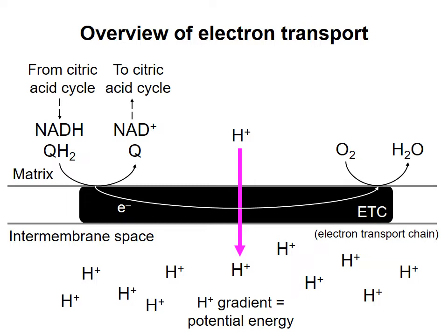The process of electron transport is energetically favorable. The energy released from movement of electrons from one carrier to another is used to move protons, or hydrogen ions, across the inner mitochondrial membrane from the matrix to the intermembrane space. This results in an electrochemical proton gradient across the membrane, which is a form of potential energy.